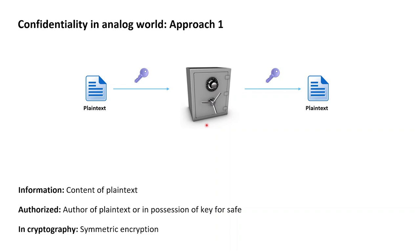With 10 participants, this is 45 pairs and as such 45 safes that would need to be available. Generalizing this, we see that the number of safes required is roughly the square of the number of participants, which is a number that doesn't scale well with the number of participants in the system.